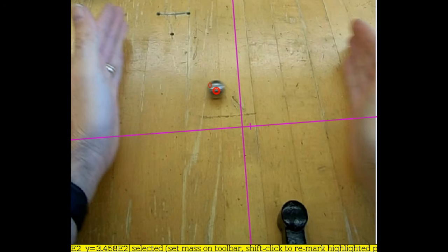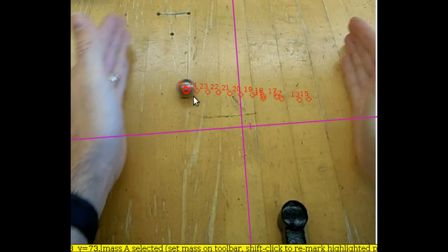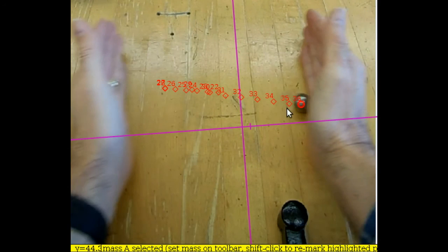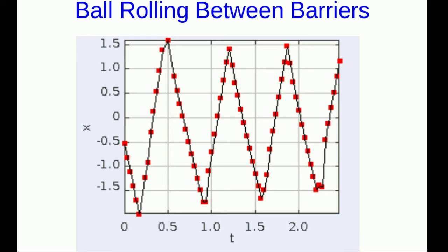Many oscillations behave like a mass on a spring — highest speed in the middle — but not all of them. Here's an example: a ball rolling between my hands. Between contacts, the ball moves at pretty much constant speed. The position-versus-time graph for that ball looks like a zigzag, because it has constant velocity between contacts with my hands. It's a bit messy since I wasn't able to make the ball go the same distance each time, but this is still an oscillation.